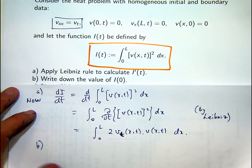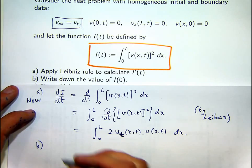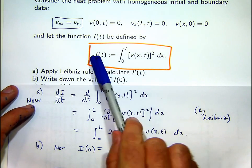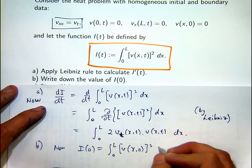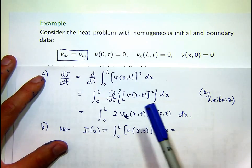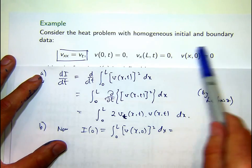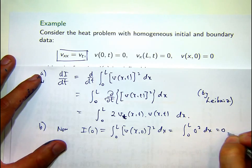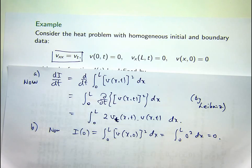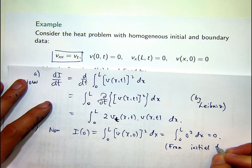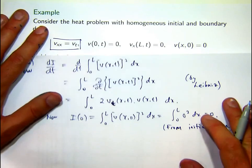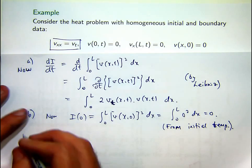Write down part b: write down the value of I at zero. What is I of zero? Go through and plug in t equals zero. If v is a solution to this problem, what do we notice about v of x comma zero? It's zero. So the value of our newly defined function I at t equals zero is just zero. We got that from the initial temperature. That's pretty easy.